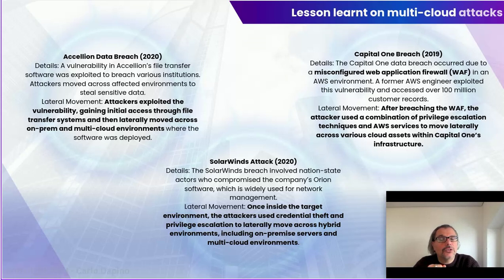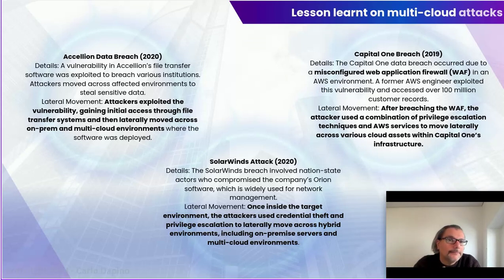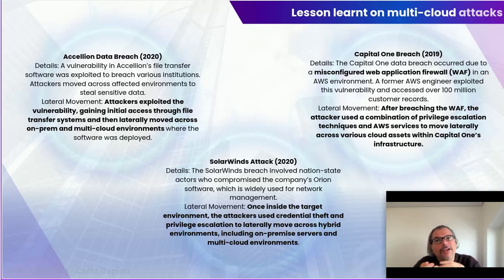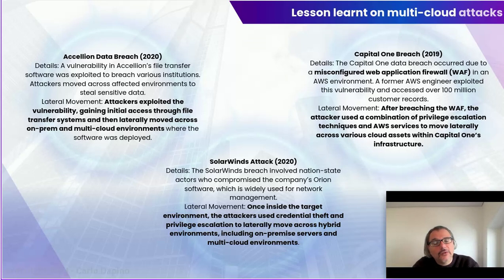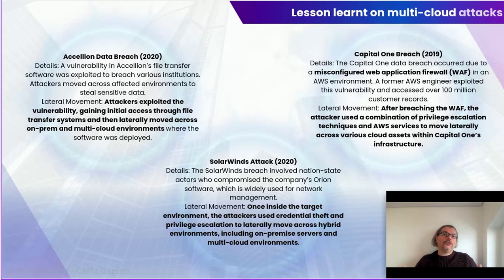A change could come from an attacker modifying your environment, or it could be a change the cloud service provider made directly in the environment or in the product they provide, inadvertently allowing certain things. I want to highlight how API versioning is important because new versions of an API can allow new capabilities and change your threat model. That's why threat modeling is such an important conversation — having an understanding of which capabilities and exposures exist in your environment.